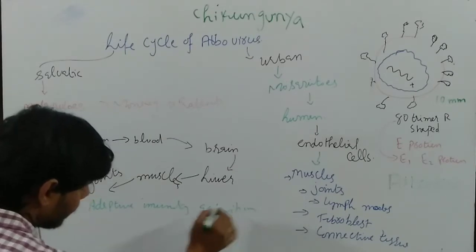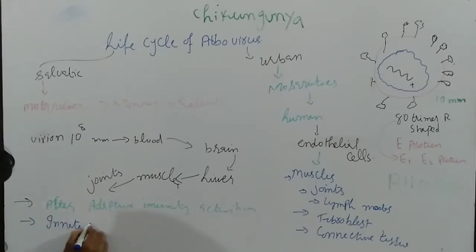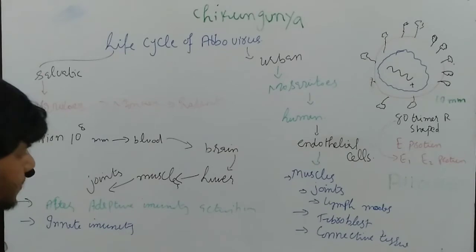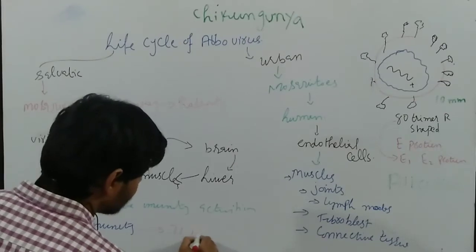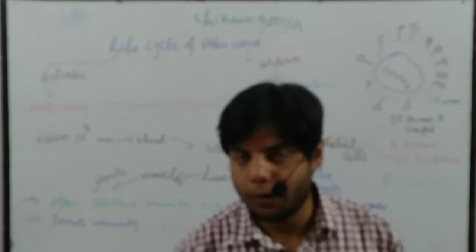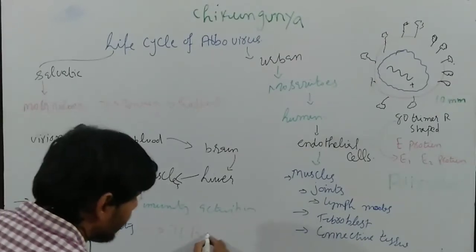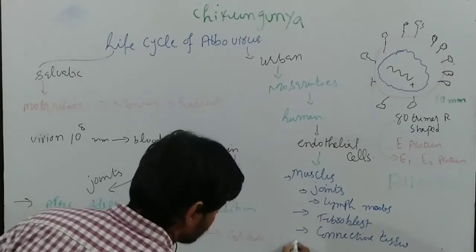Moreover, we have another immunity activated — we call that innate immunity. The innate immunity may be activated when this virus contacts the TLR, Toll-like receptors, which are usually found on dendritic cells and macrophages. When the virus contacts the TLR of these immune cells, they will activate the innate immunity and then activate a cascade reaction.